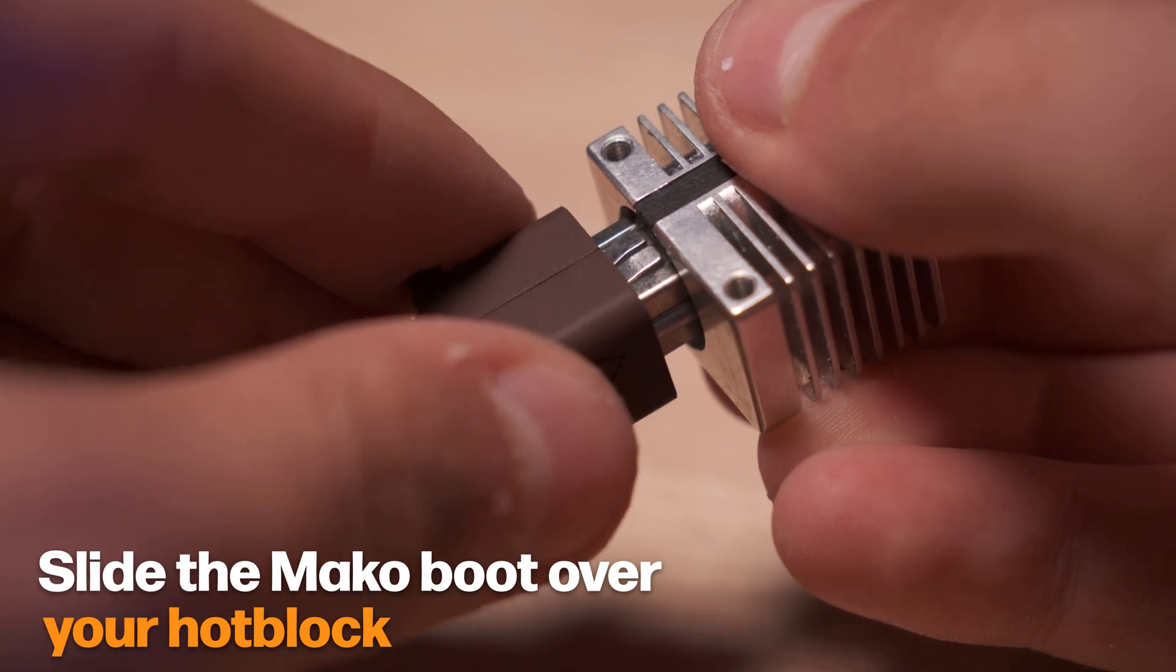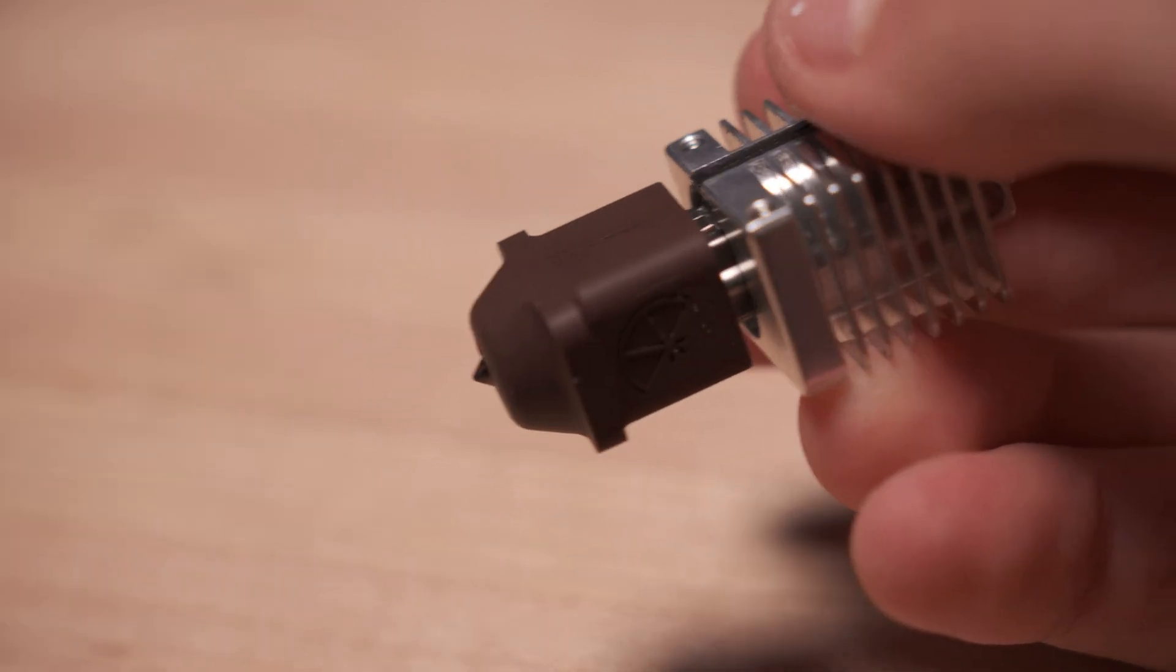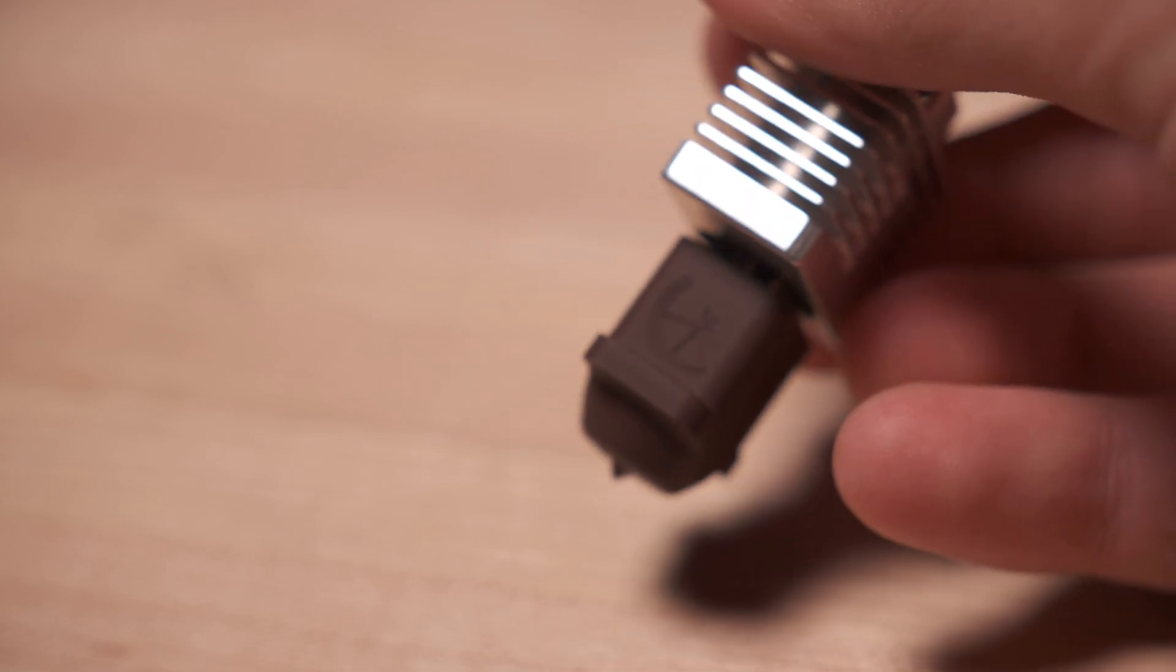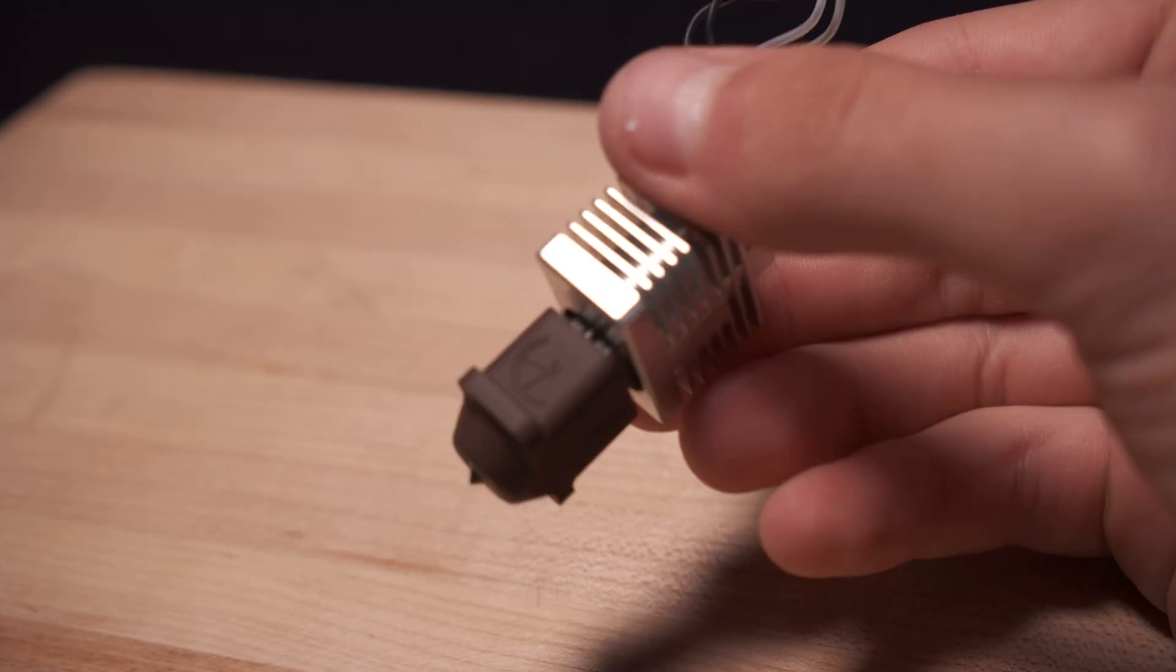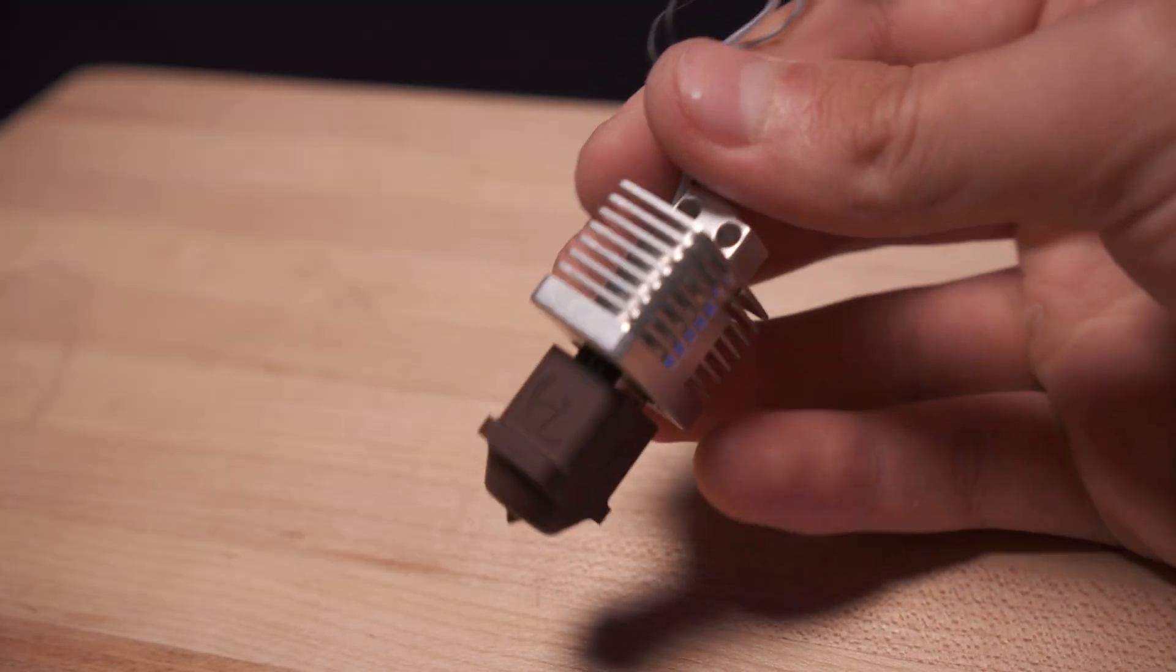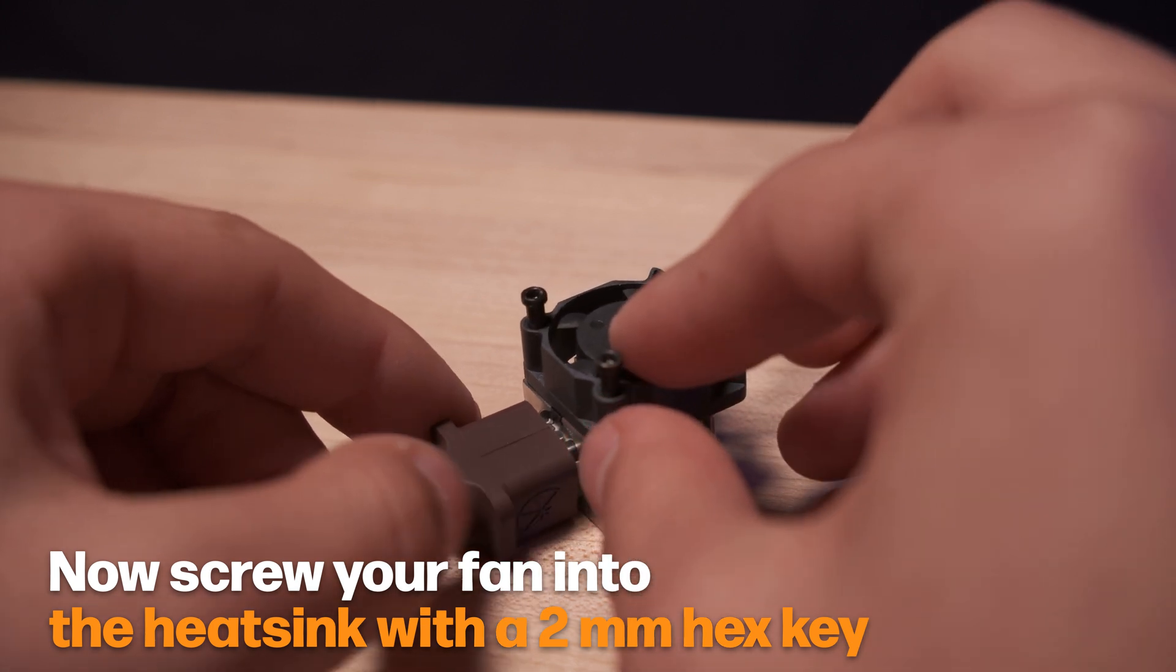Next, you'll install the boot by simply pressing it onto the end of the nozzle. Finally, you'll place your stock fan onto the heat sink using the screws that it came with.